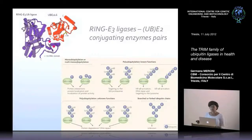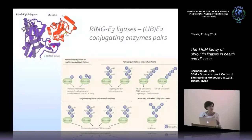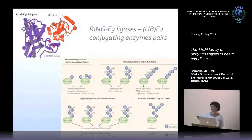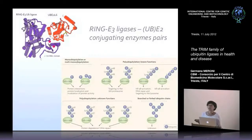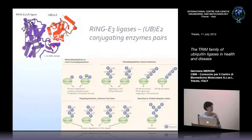The classical Lys48 chain leads to proteasomal degradation, while Lys63 chains are mainly involved in NF-κB signaling, and many other chain topologies exist whose functions are not yet clarified. The choice of E3 and E2 pairing is quite important to determine the fate of the substrate. Very little is known about how these pairs are selected — there are almost 600 ring E3 ligases and only about 40 E2 conjugating enzymes, so there must be some preferential selection.